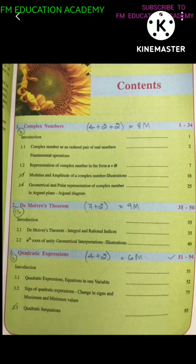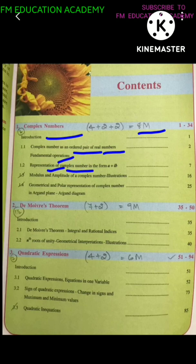First chapter is complex numbers, which will be of 8 marks. It has introduction, complex number as an ordered pair of real numbers, fundamental operations, representation of complex number in the form of A plus IB, modulus and amplitude of a complex number, illustrations, geometrical and polar representation of complex number in Argand plane.